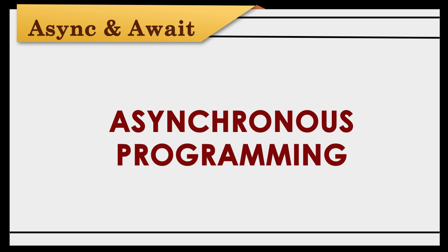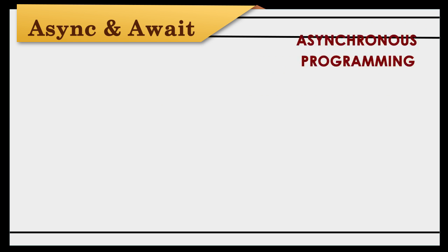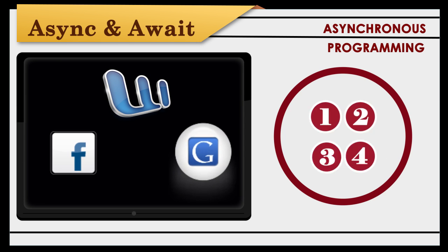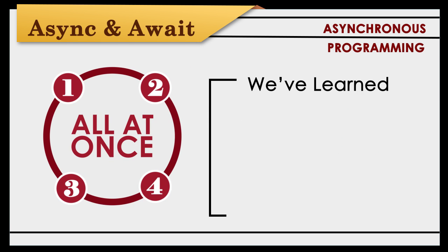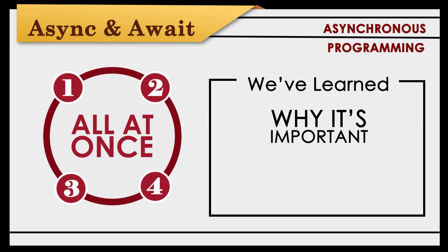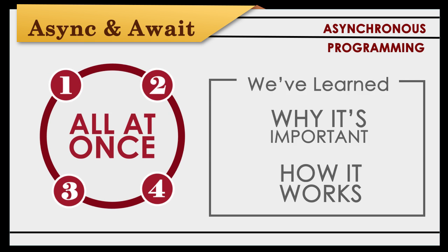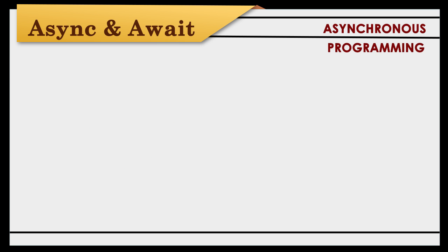Today, we've explored how asynchronous programming allows multiple events to happen on screen at the same time. You've learned why this is important when programming apps for mobile devices and saw how this works in code. You've completed async and await.